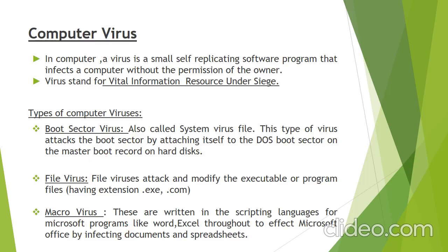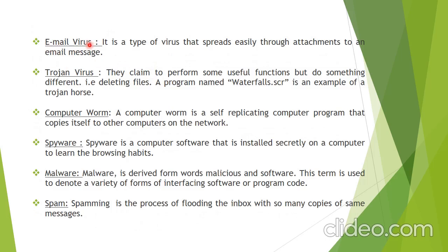Next is email virus. It is a type of virus that spreads through attachments to an email — if you open an unknown person's link in an email, a virus may enter your computer. Trojan virus: it claims to perform some useful function but actually deletes our files or damages our system. For example, a program named waterfalls.scr — if you download a wallpaper from the internet and install it, this type of virus can enter and delete files.